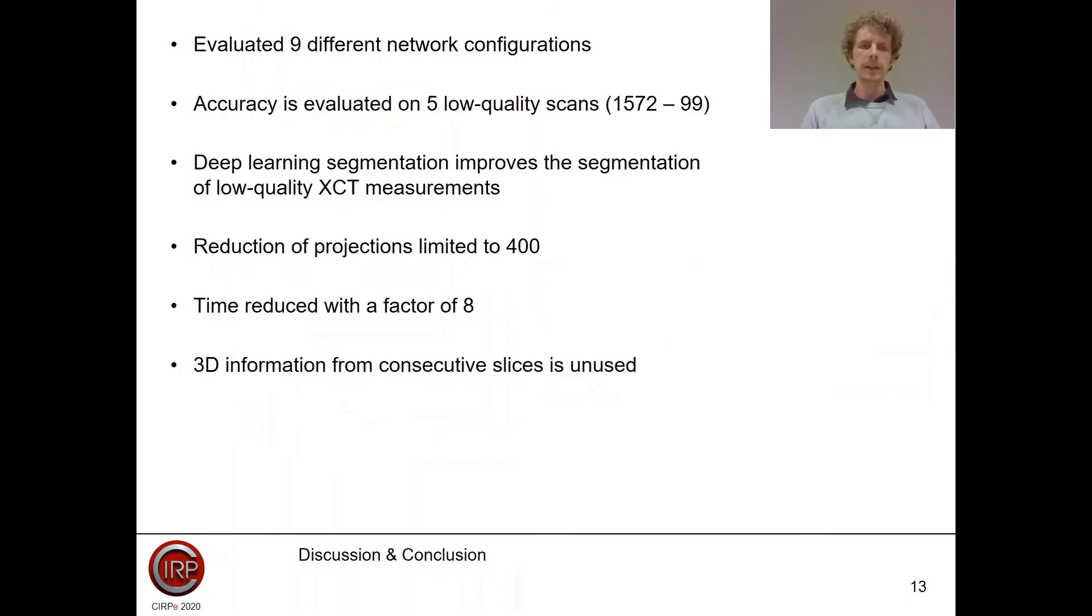To summarize, we evaluated 9 different network configurations and chose the optimal one. We trained this optimal network on 5 low-quality scans with a number of projections ranging from 1,500 until 100. We see that the deep learning segmentation improves the segmentation of low-quality XCT measurements, but there is a limitation to how far we can reduce the number of projections, which was in this case 400. But this already gives a time reduction factor of 8.